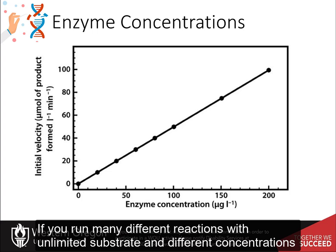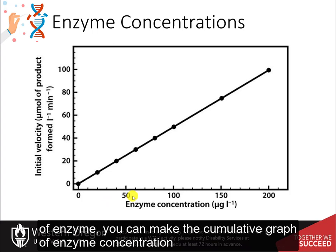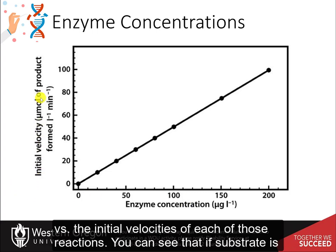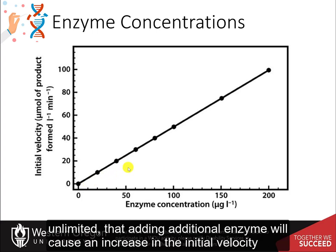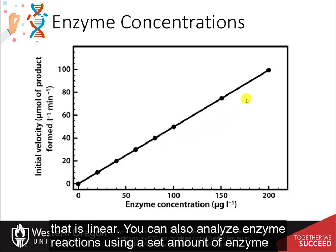If you run many different reactions with unlimited substrate and different concentrations of enzyme, you can make a cumulative graph of enzyme concentration versus the initial velocities of each of those reactions. You can see that if substrate is unlimited, adding additional enzyme will cause an increase in the initial velocity that is linear.